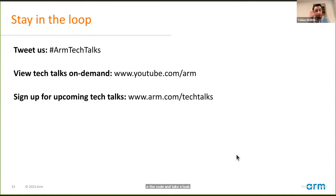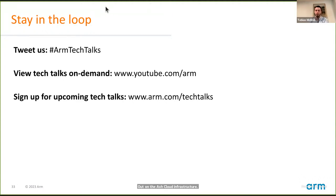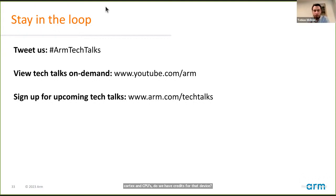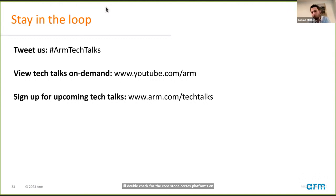Sandeep, are there any free credits for people to try out ARM Virtual Hardware on the AVH cloud infrastructure? Right now the third-party hardware we demoed is available in private beta access — you can sign up at the link in the slides. For the Corstone and ARM Cortex CPU platforms on AWS, there may still be credits available, though they might have run out. For the AVH private beta, it is entirely free at the moment. There is a small approval step — applications are reviewed and if they tick the boxes, we'll approve you within 24-48 hours.